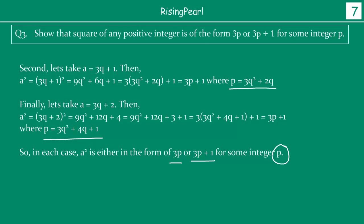If the question asks you to show that the cube of a positive integer is of some particular form, you follow the same approach: first find the general form of the integer itself, then cube each of the different forms and show each can be expressed in the form given in the question. In the next video we are going to start by taking a look at the fundamental theorem of arithmetic.